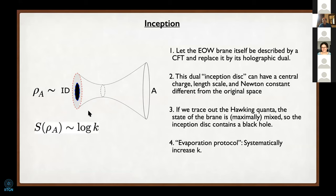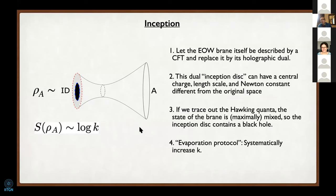Since the states of this end-of-world brane were entangled with the radiation and we've traced out the radiation, this system on the end-of-world brane must look thermal, and therefore its dual must have a black hole inside. The evaporation protocol is to systematically increase the number of radiation quanta with which the end-of-world brane is entangled. The entropy of the black hole within this inception disk—the holographic dual of the end-of-world brane—is log K, where K is the number of Hawking quanta.